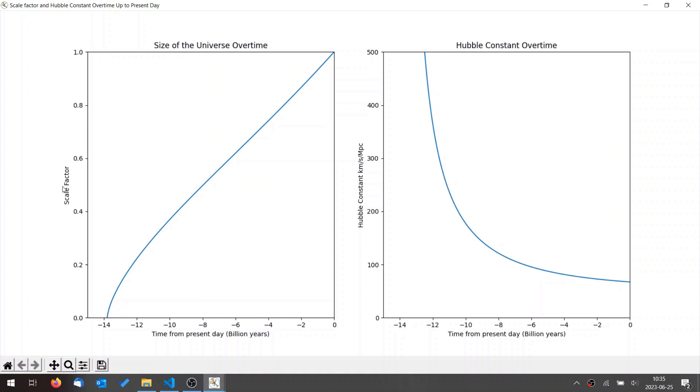On the y-axis, we have the scale factor. So if the scale factor is 0.6, it means that the universe was 60% as large as it is now. You can see that the universe has gotten larger with time, and that the expansion has been decelerating.